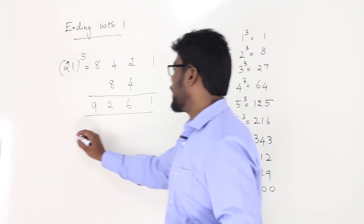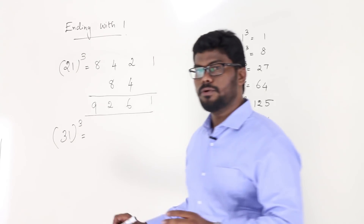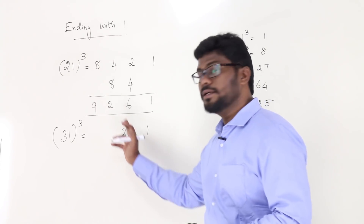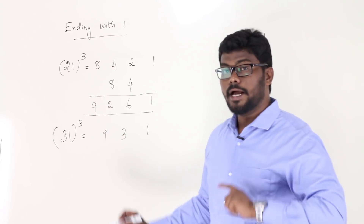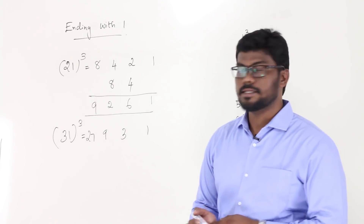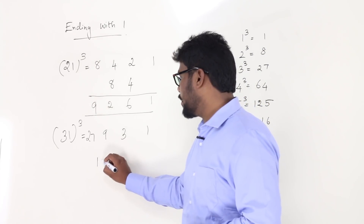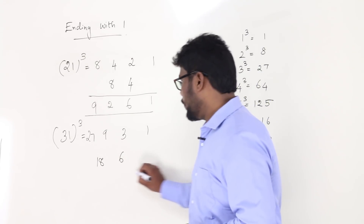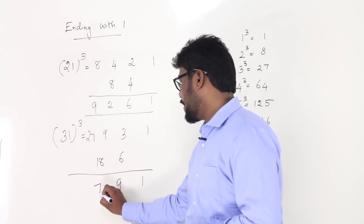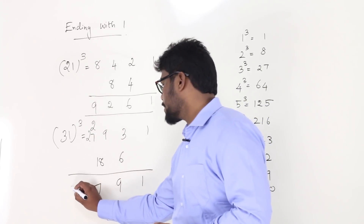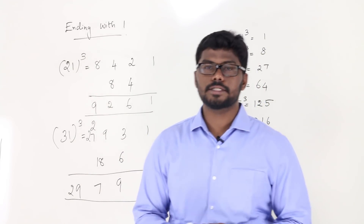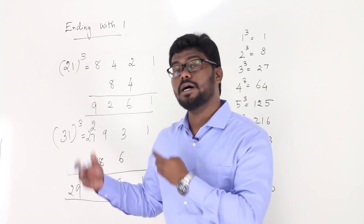One more Type 2 example: 31 cube. Write right to left: 1, 3. Square 3: that's 9. Cube 3: that's 27. Ignore first and last, double the middle digits: 18 and 6. Add: 1; then 9 plus 18 is 27 — write 7, carry 2; 27 plus 2 is 29. The answer is 29791.